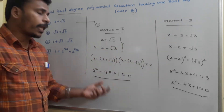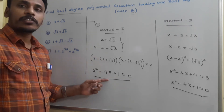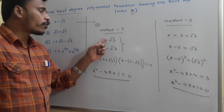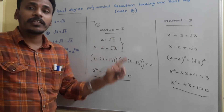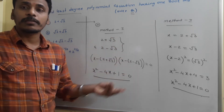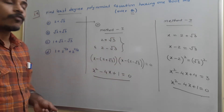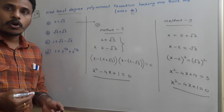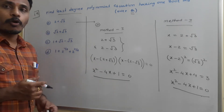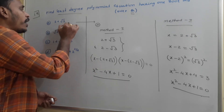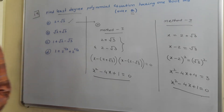Method 1 is helpful to find the equation when you have two roots. Whereas Method 2 is very simple to find the equation for all these types of problems. Have a look at problem A, and then I will discuss B, C, and D.